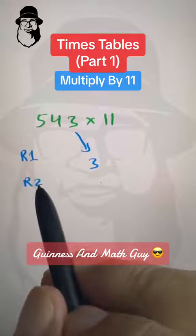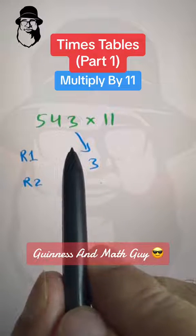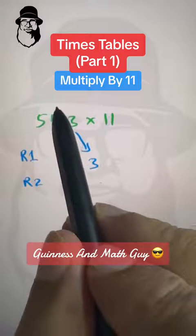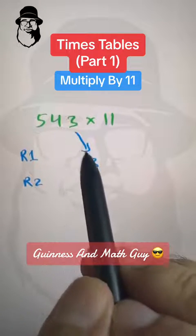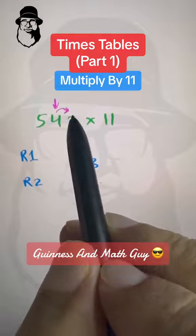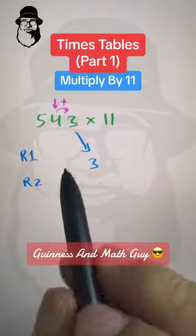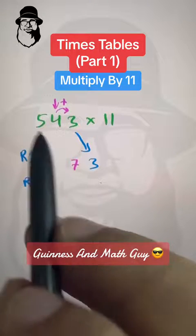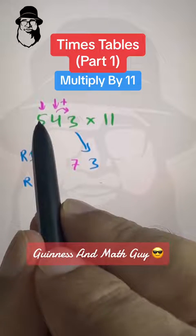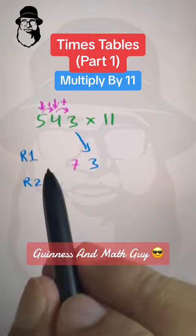And rule number two is we add each digit to its neighbor. So when we bring down this and then we are here, neighbor is always on the right. So 4 plus 3 is 7. We write 7. And then we move one digit at a time. We are here. So 5 plus its neighbor, 4 is 9.